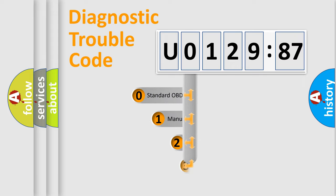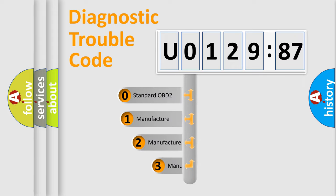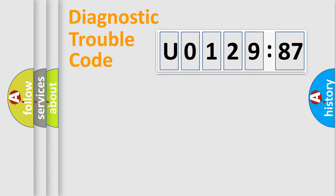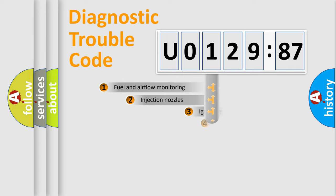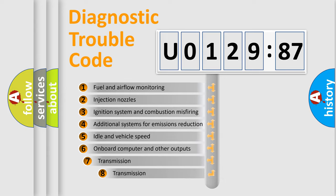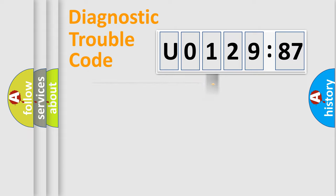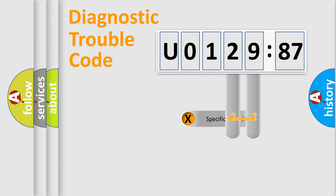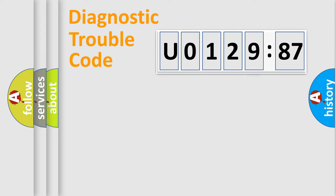This distribution is defined in the first character of the code. If the second character is expressed as 0, it is a standardized error. In the case of numbers 1, 2, or 3, it is a manufacturer-specific error expression. The third character specifies a subset of errors. This distribution is valid only for the standardized DTC code. Only the last two characters define the specific fault of the group.